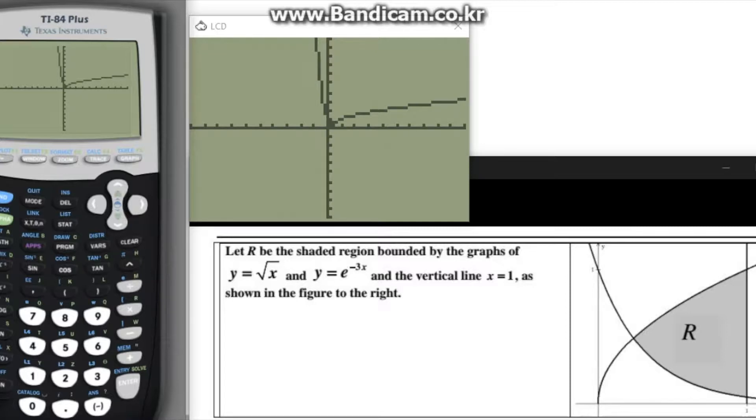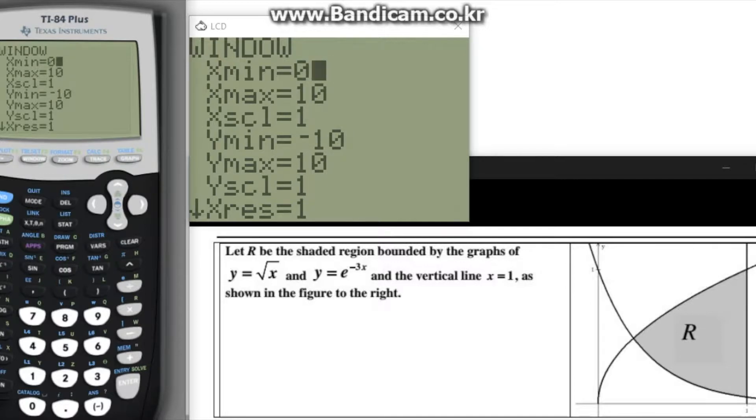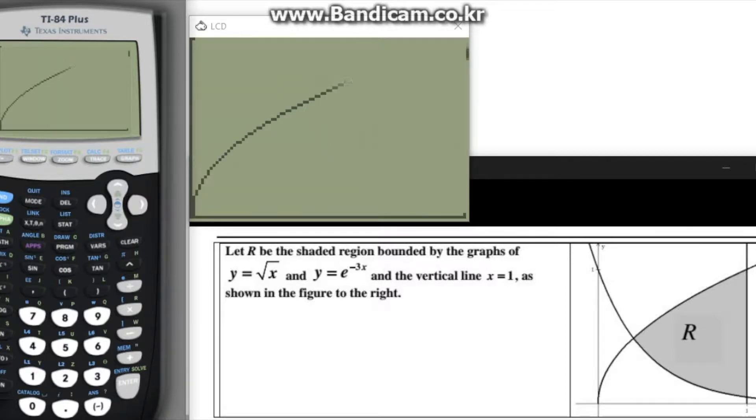In order to see exactly where the intersection is, we will zoom in by pressing the window button and changing both the x and y range to go from 0 to 1. Once you do this, press graph again and as you can see, the resulting image makes it much easier to see where exactly the two equations are intersecting.